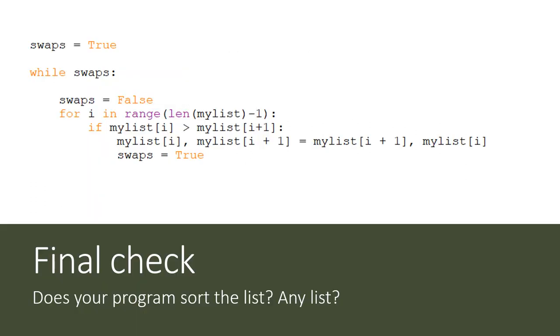So here is the completed bubble sort. We set swaps to true to begin so that the while loop will even begin. And then before we traverse the list, we set swaps to false.